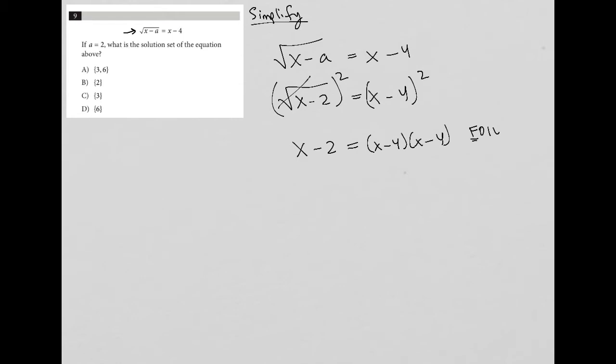So FOIL, the F stands for multiplying the two first things. I get x squared. O is the two outer things. So I get negative 4x when I multiply those. I are the two inner things. I get another negative 4x. And L is the two last things. I get negative 4 times negative 4, which is positive 16.